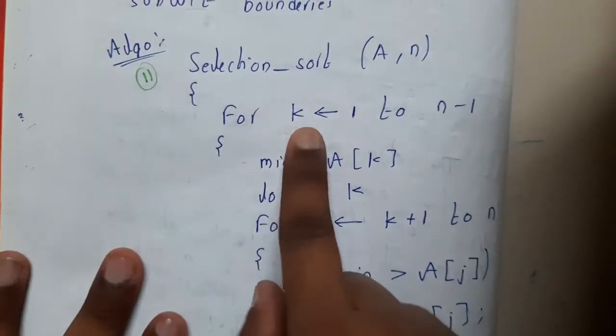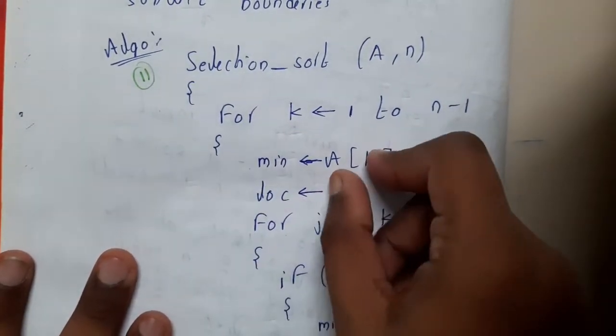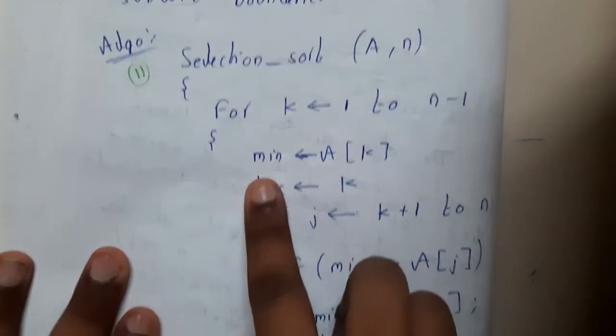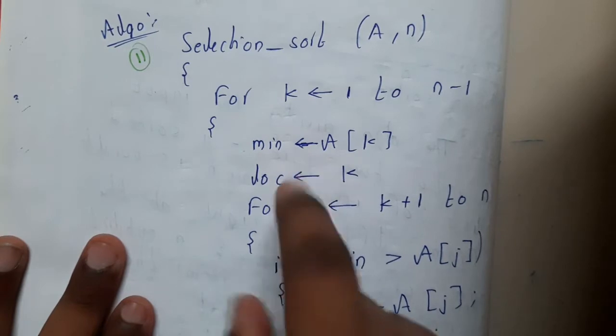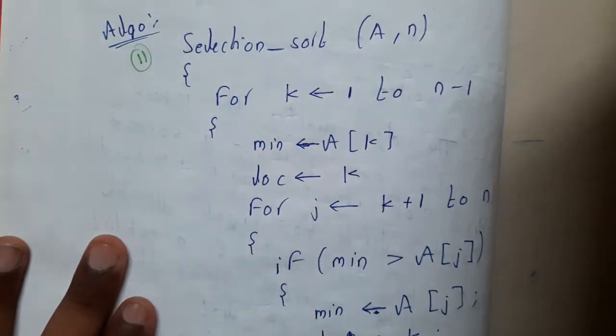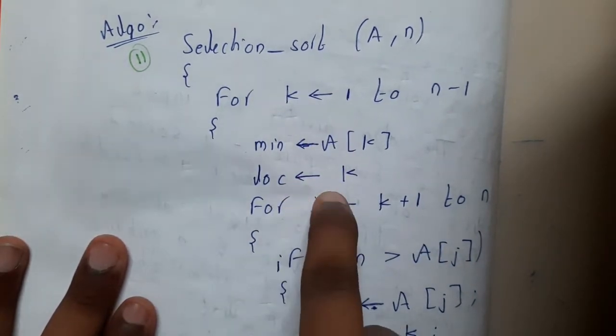Selection sort of A, n. For k = 1 to n-1, so first element to last element minus 1. Minimum equals A[k]. The first element is considered as A[k], so location is k.